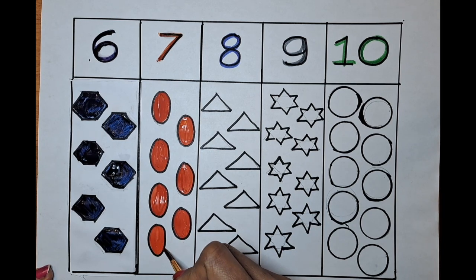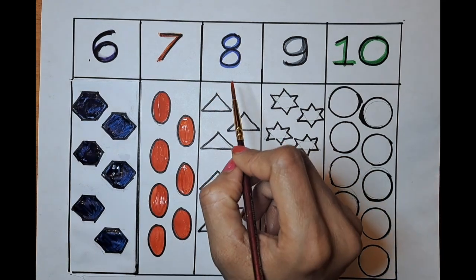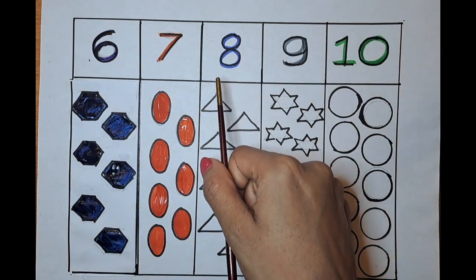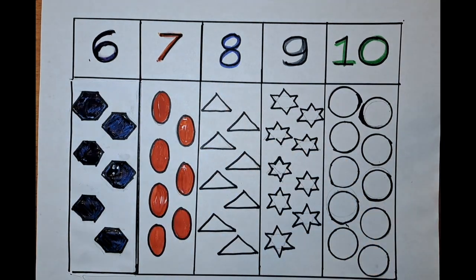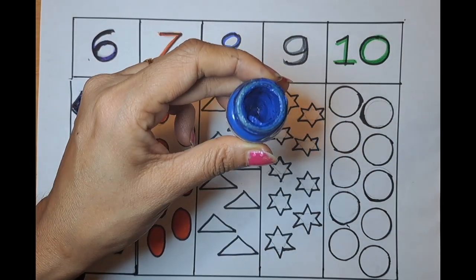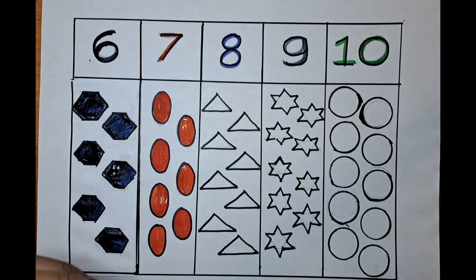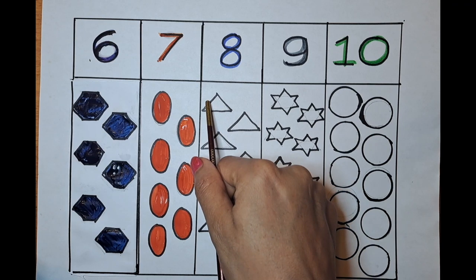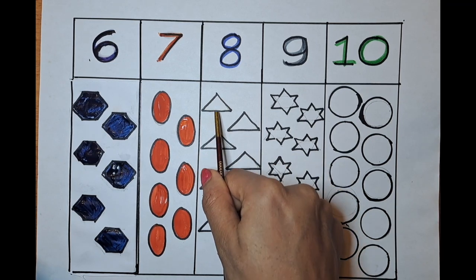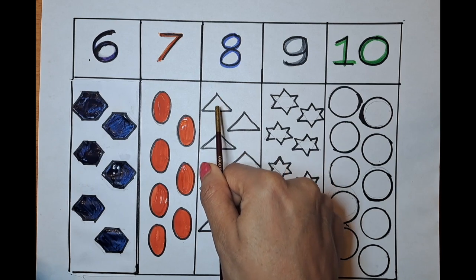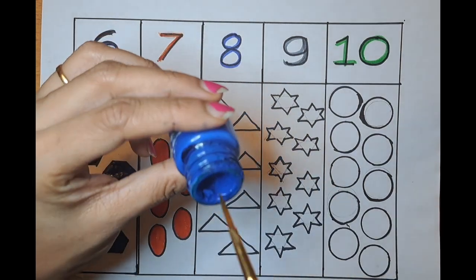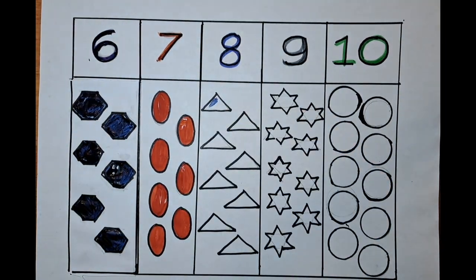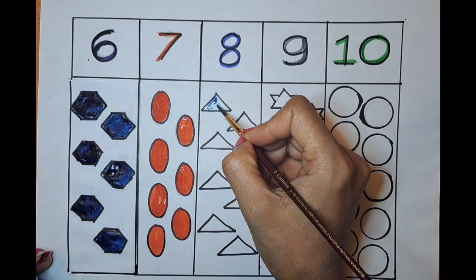What is the next number? It's eight. It's a light blue color. Can we do this with the light blue color? What is the next shape? It's a triangle. A triangle has three sides: one, two, three. Let's color it with the light blue.